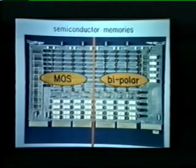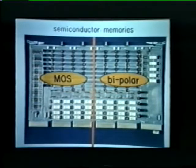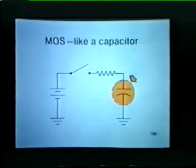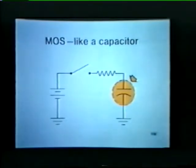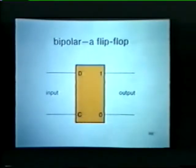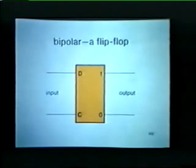Two types of semiconductor memories are available: metal oxide semiconductor — MOS (pronounced "moss") — and bipolar. MOS memories are composed of one-bit semiconductor cells. Each MOS cell can be likened to a small capacitor: it is charged to a certain potential when writing data into it and must be recharged periodically to maintain the correct potential. This recharging is called refreshing. Prior to reading stored data, the MOS cell must also be pre-charged to the correct potential to ensure valid data readout. Bipolar memories, on the other hand, are made of numerous semiconductor flip-flop cells arranged in a matrix.